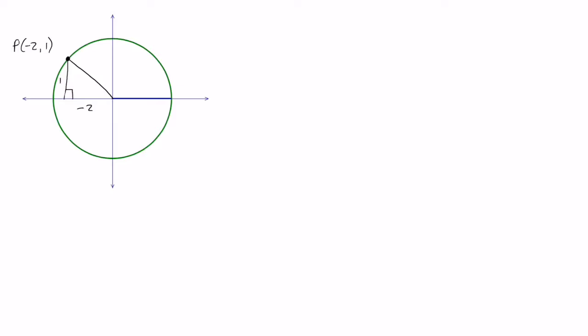To do that, use Pythagoras' theorem. Since I'm looking for the hypotenuse, I know that I'm going to add the squares of the two legs. So that's why it's 1 squared plus negative 2 squared is r squared, which is 1 plus 4 equals r squared. r squared is 5. r is the square root of 5.